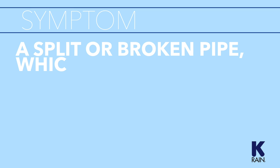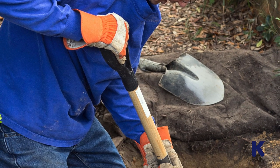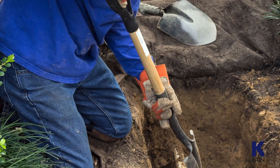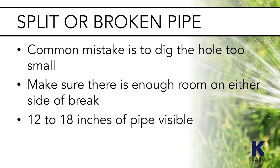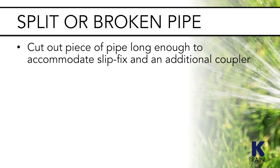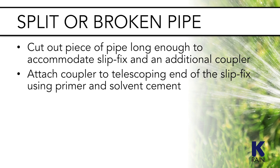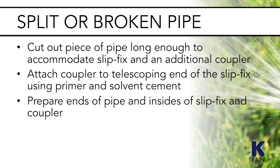A split or broken pipe usually causes a wet spot in the lawn or water visibly flowing out of the ground. Fixing a pipe usually involves cutting out and replacing the bad section. Dig up the broken area — a common mistake is digging the hole too small; make sure there is room on either side of the break, with 12 to 18 inches of pipe visible to work with. When working with PVC, a telescoping coupler (sometimes called a slip fix) can speed up the process. Cut out a piece of pipe long enough to accommodate a slip fix and an additional coupler, attach the coupler to the telescoping end of the slip fix using primer and solvent cement or a one-step cement like Christie's Red Hot Blue Glue, prepare the ends of the pipe, then slide the slip fix over one end of the broken pipe and extend the telescoping end so the coupler slides over the other end, completing the repair.